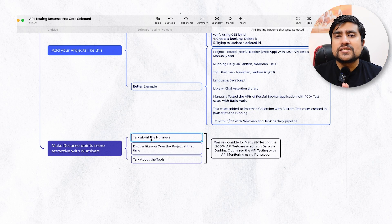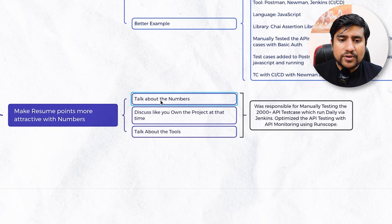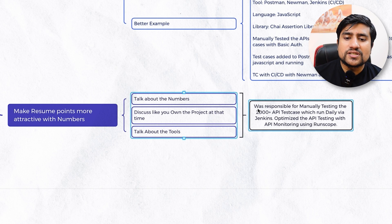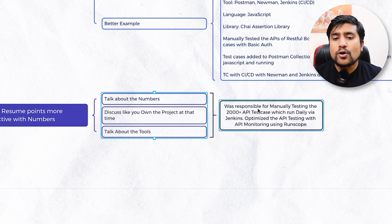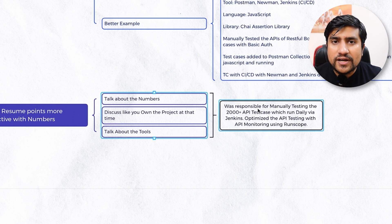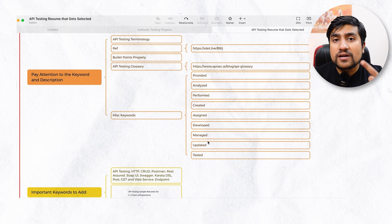So this is how you can add it. Overall conclusion: talk about numbers whenever you're creating a resume, add proper numbers, discuss your own project and what you have done, talk about the tools — always talk about the tools. For example, you can say you were responsible for running API tests manually with almost 2,000 test cases running daily, optimized the API testing so they run faster, and added API monitoring using the RunScope tool. Use power keywords like: developed, managed, updated, tested, performed.